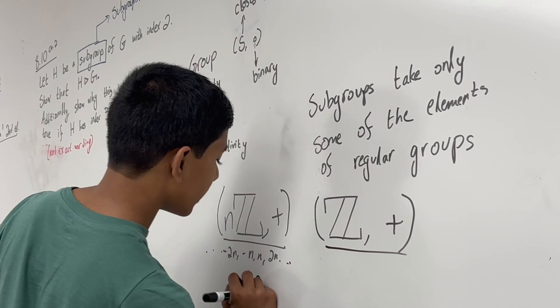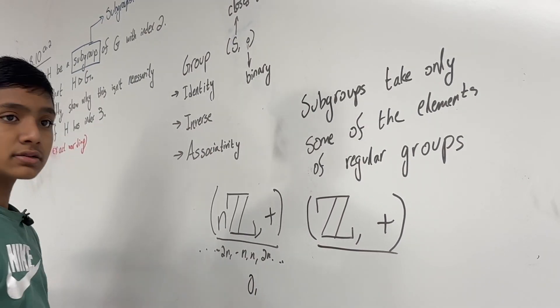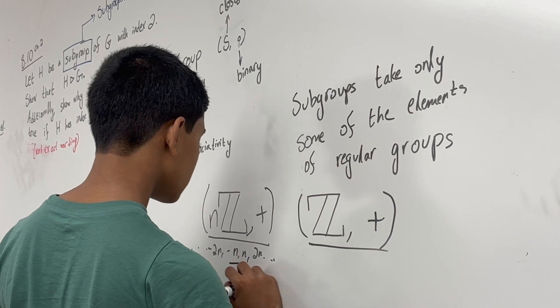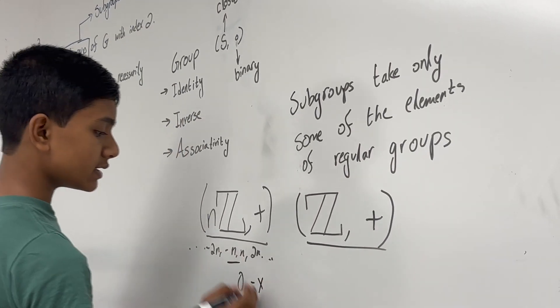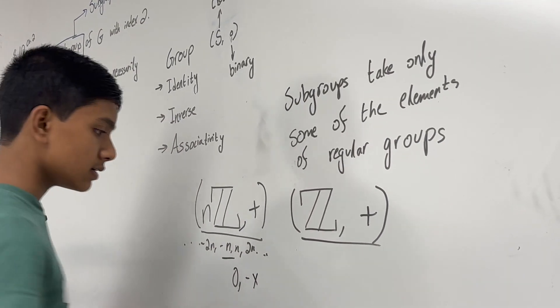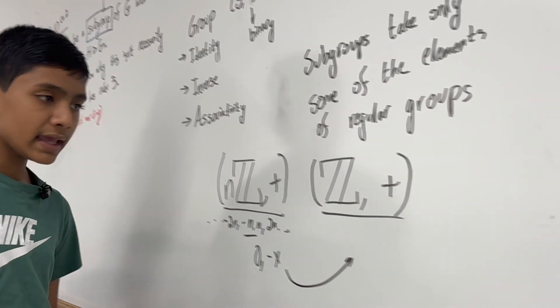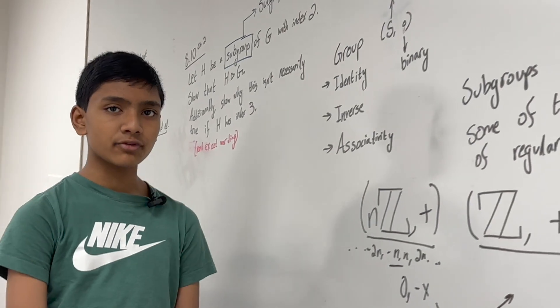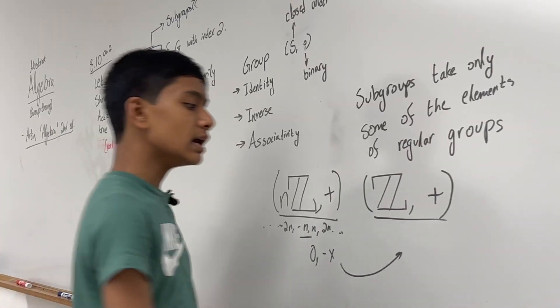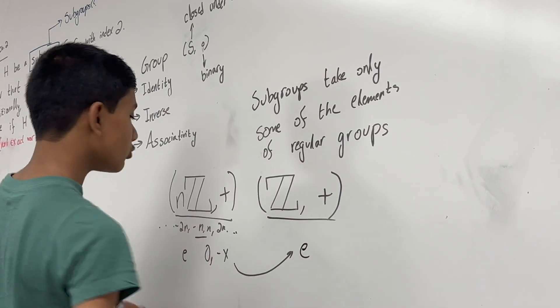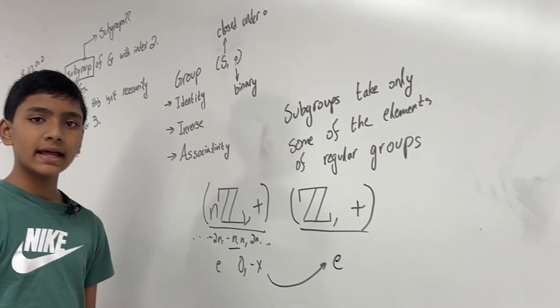This is a direct subgroup of this, because it holds all the same properties. There's definitely an identity, that being 0. There's definitely an inverse, since there were negative numbers. And there's associativity, because it's addition. And those same rules hold here.